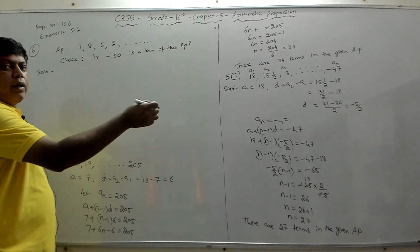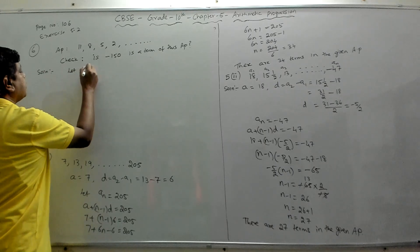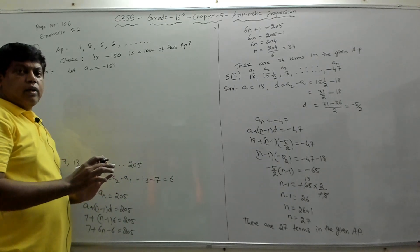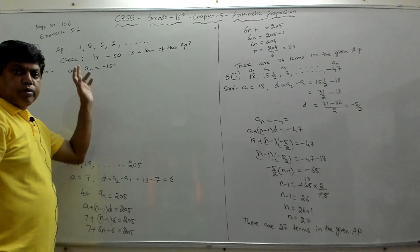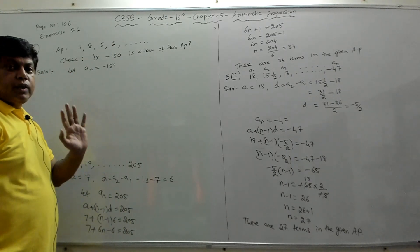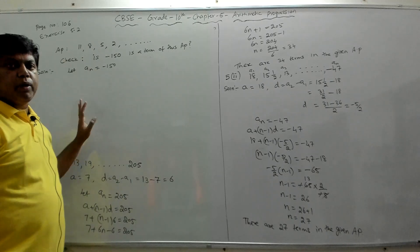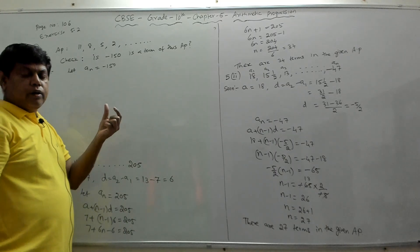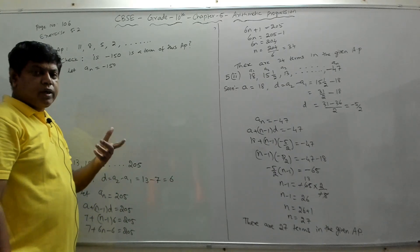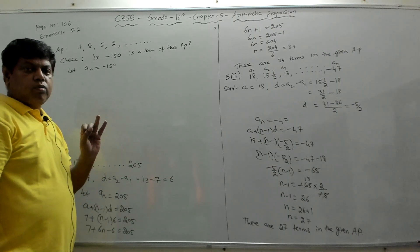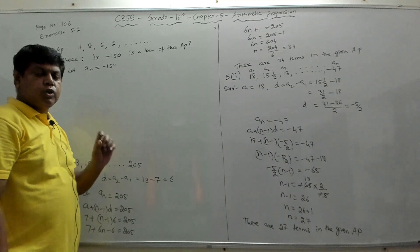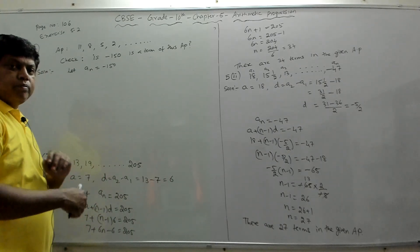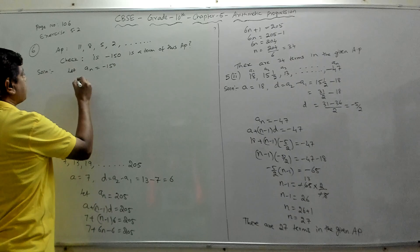We assume the nth term is −150: let an = −150. We find n — if n is a positive integer, then −150 is a term of the AP. If n is not a positive integer, then −150 is not a term. The value of n must always be a natural number.